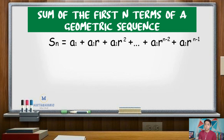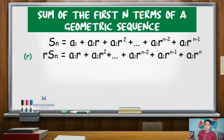Here, we first assume that the sum of the terms in a geometric sequence will be equal to s of n. Next, we will multiply r, or the common ratio, on both sides. So here we obtain r times s of n equal to a sub 1 times r plus a sub 1 r squared plus and so on plus a sub 1 r raised to n minus 1 plus a sub 1 r raised to n.